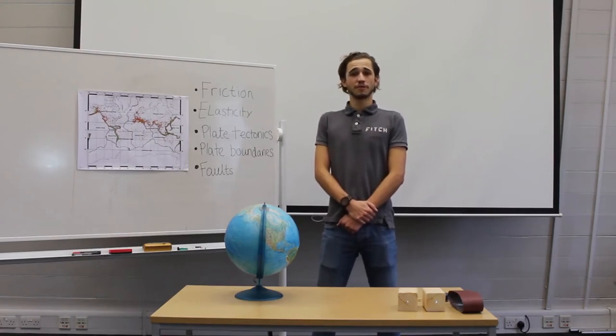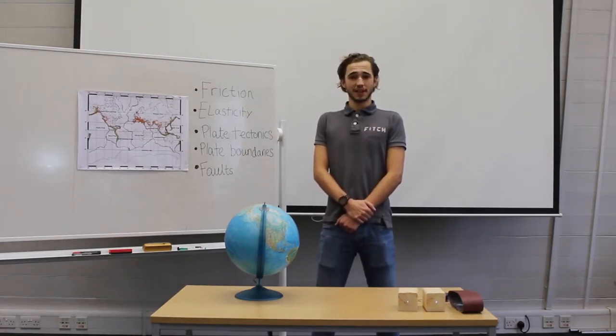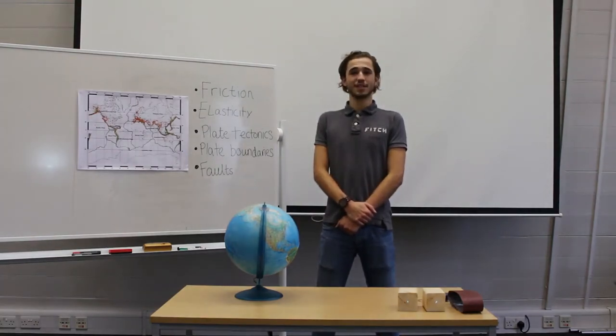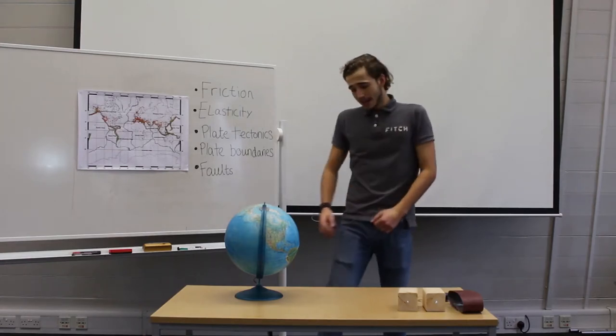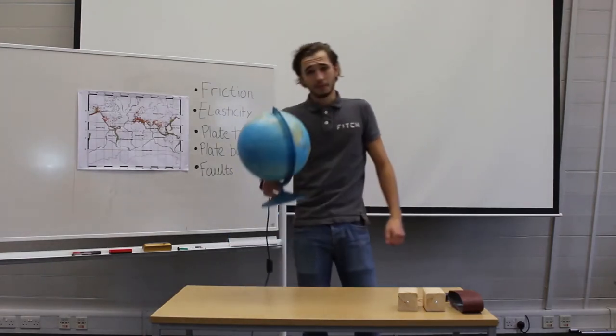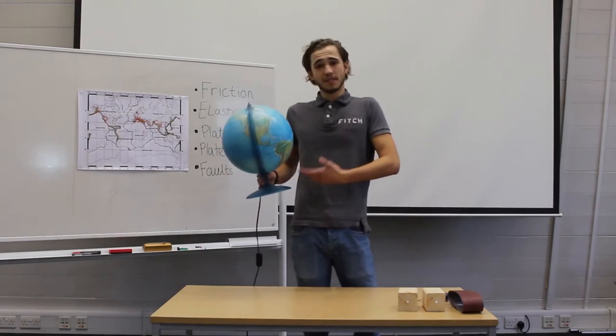But first, remember what a fault is. A fault is a fracture in a plate along which movement can occur. These fractures tend to occur near plate boundaries. Now let's have a think about a model. An example of a model would be a globe. It represents our Earth. It's a model of our planet. Do you think it's a good model of our planet?